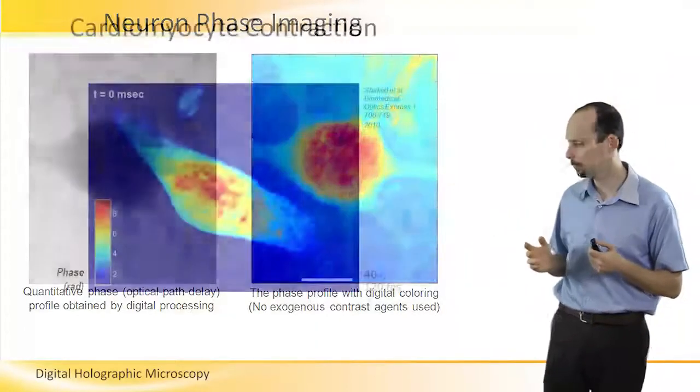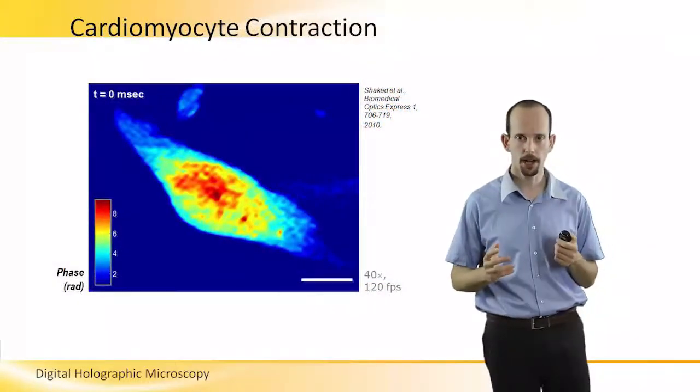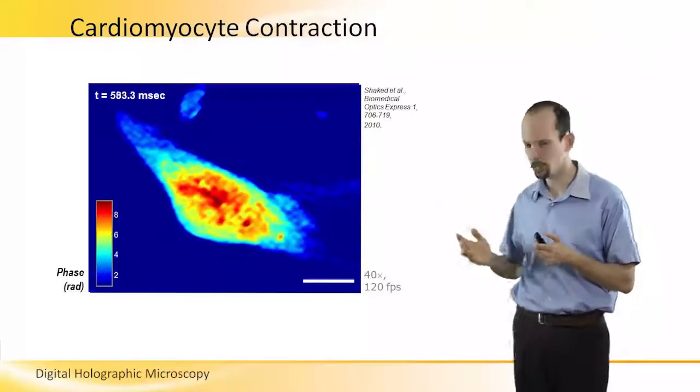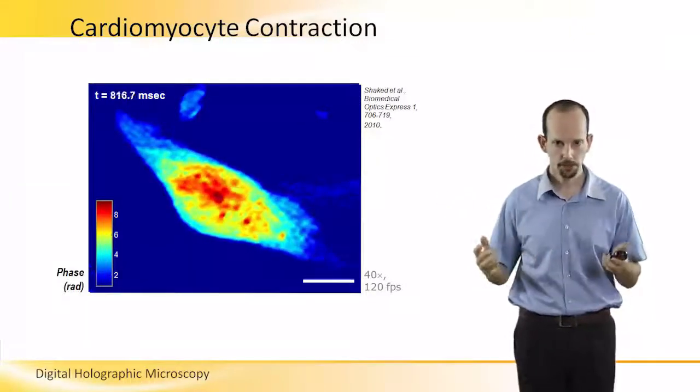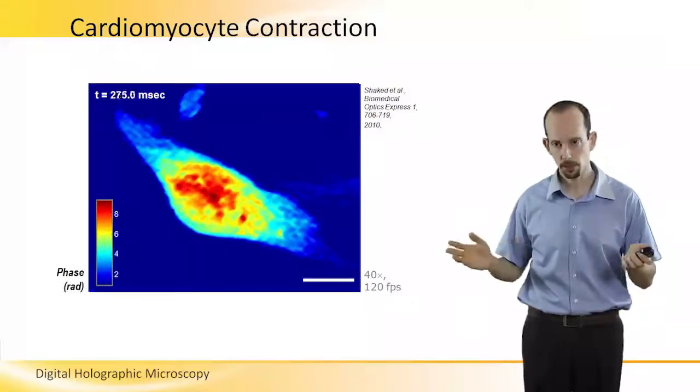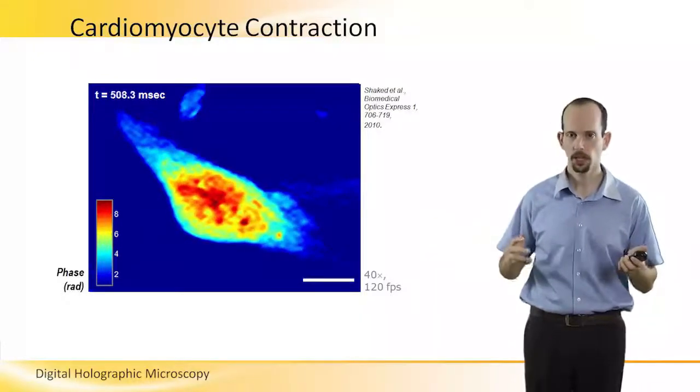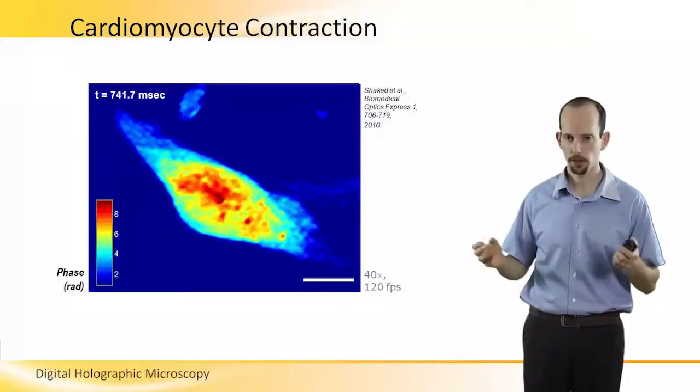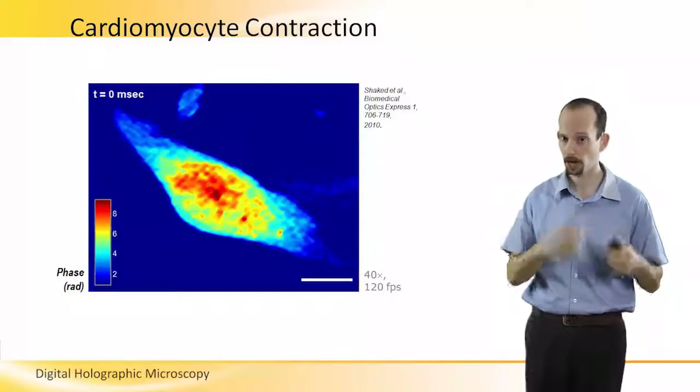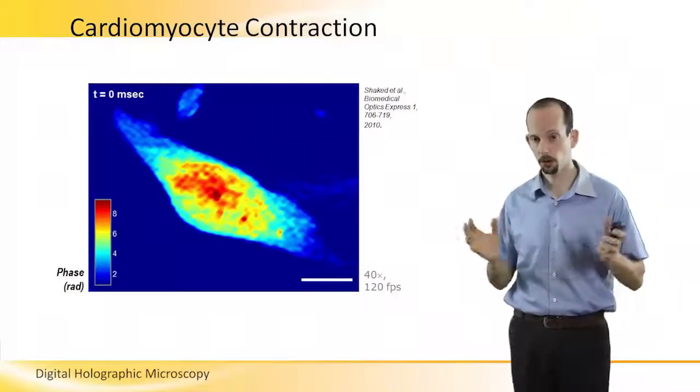Here you can see a movie of a contracting cardiomyocyte. So, you can trace the contraction of the cardiomyocyte. More information is in this paper. And therefore, you can actually learn about different differences in different conditions under which cardiomyocytes, which are the cells that compose our heart, are beating or contracting.